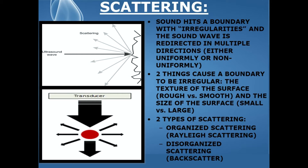There are two things that cause a boundary to be irregular: the texture of the surface — meaning is it rough versus smooth — and the size of the surface, is it small versus large.